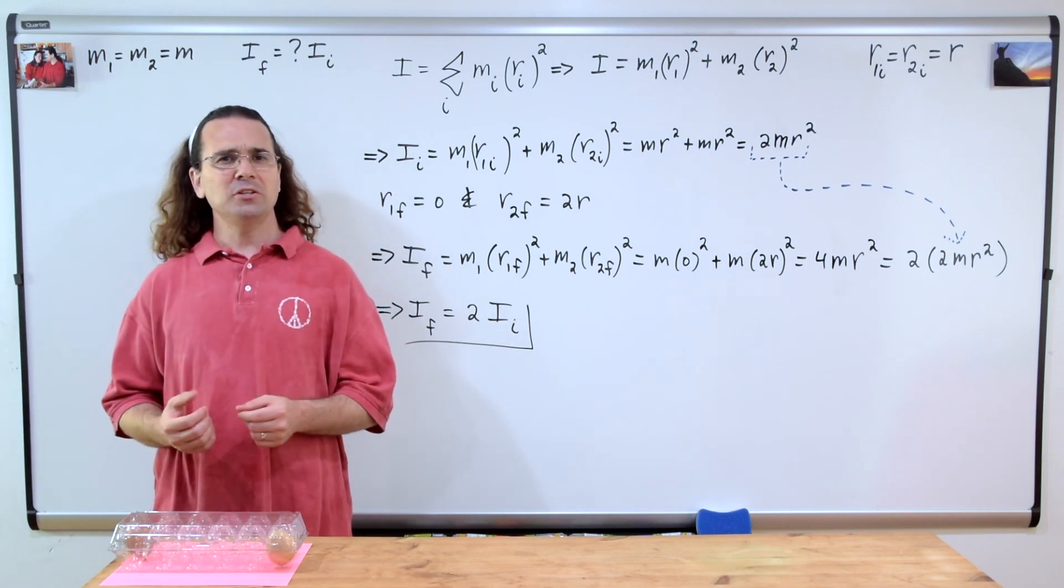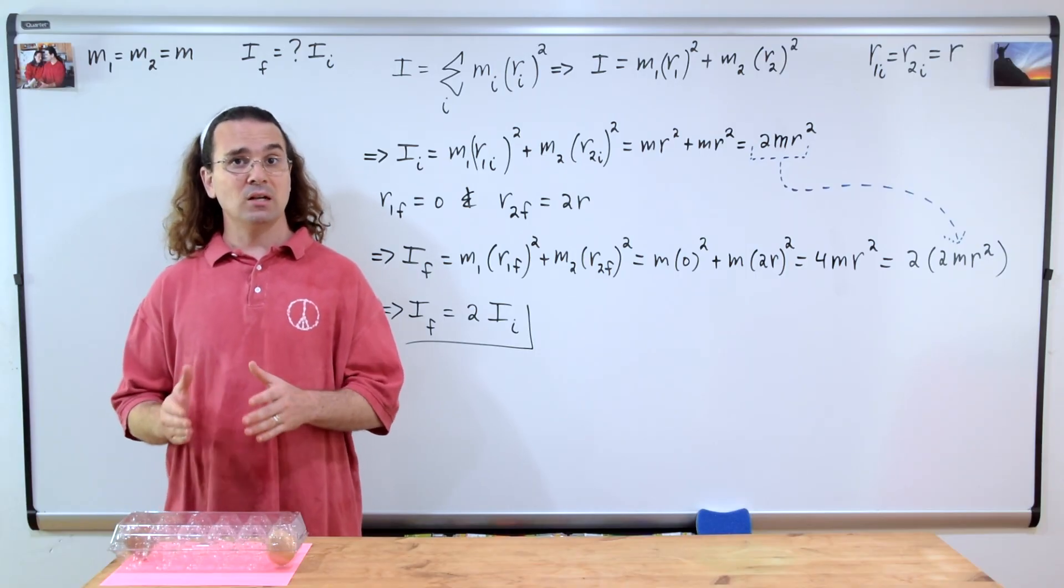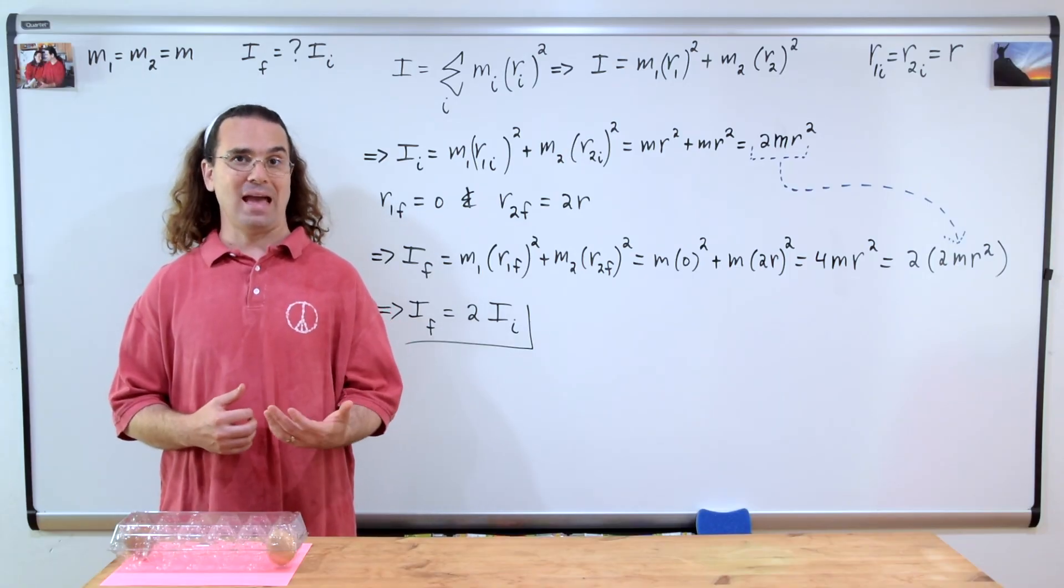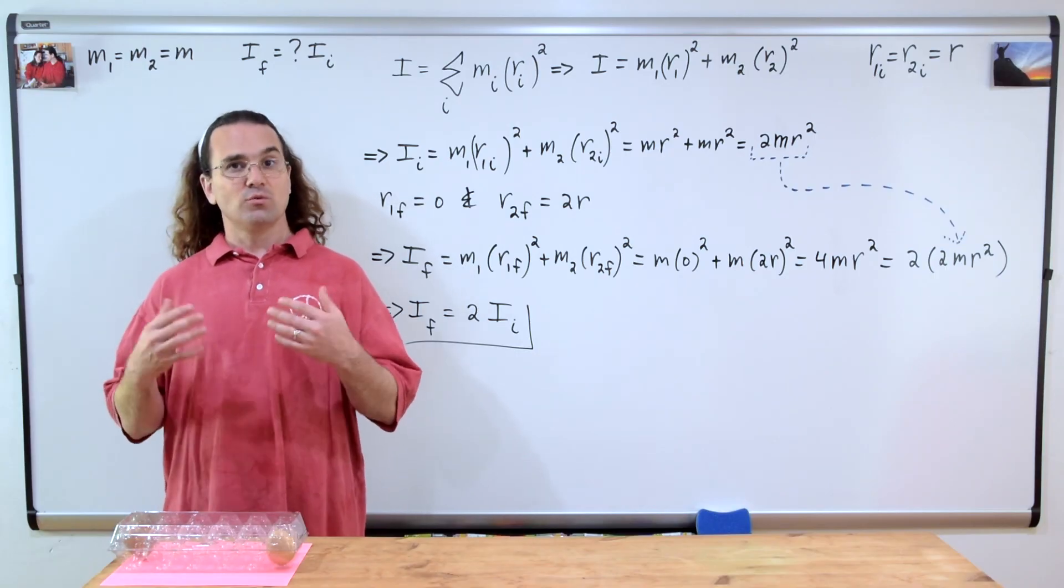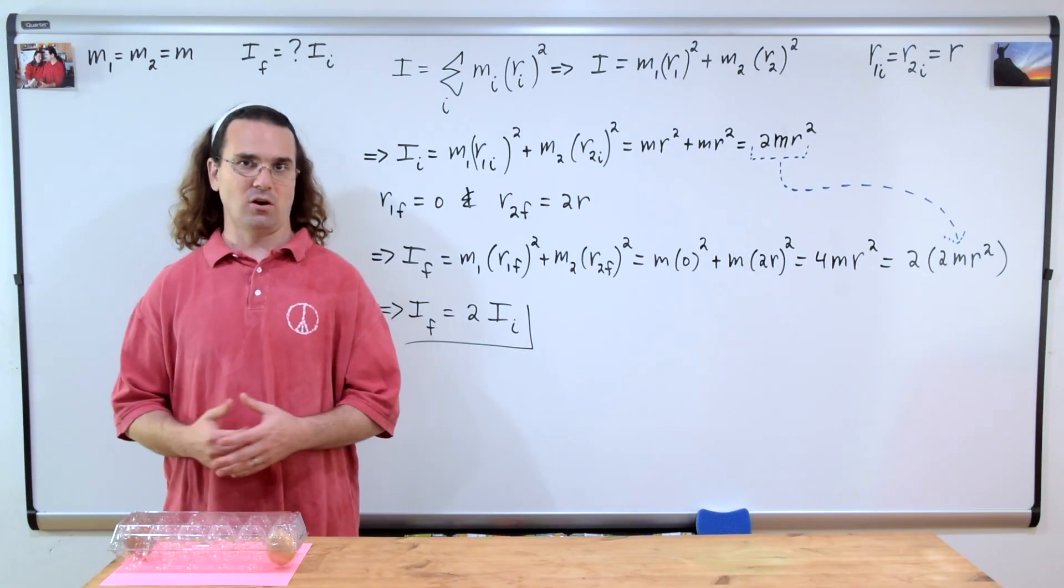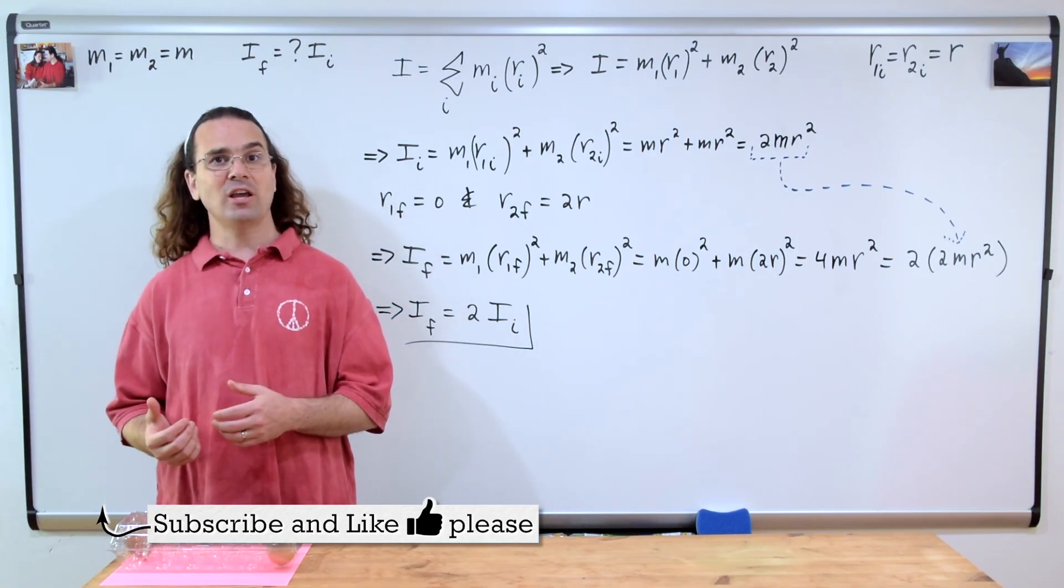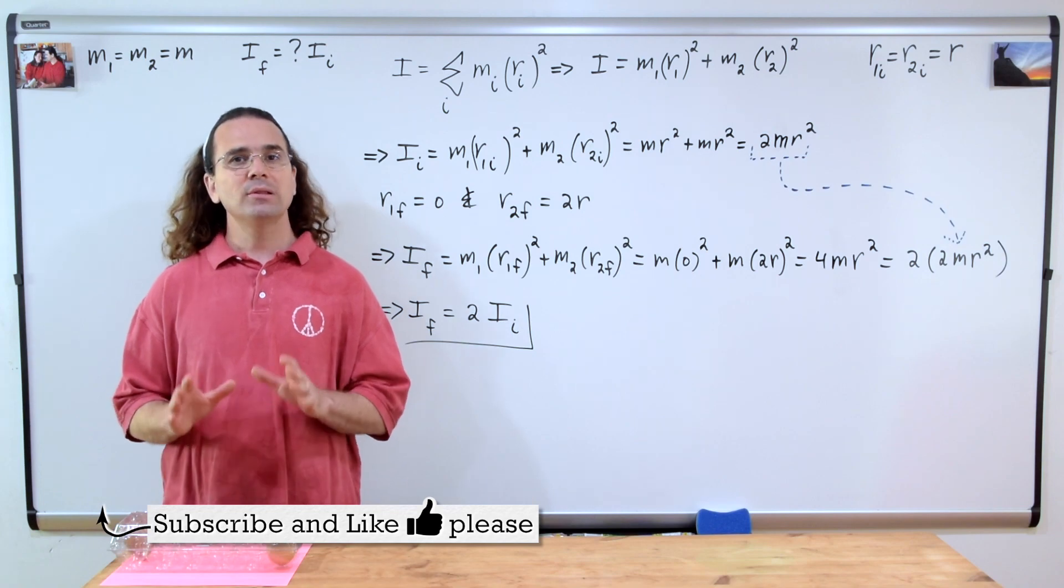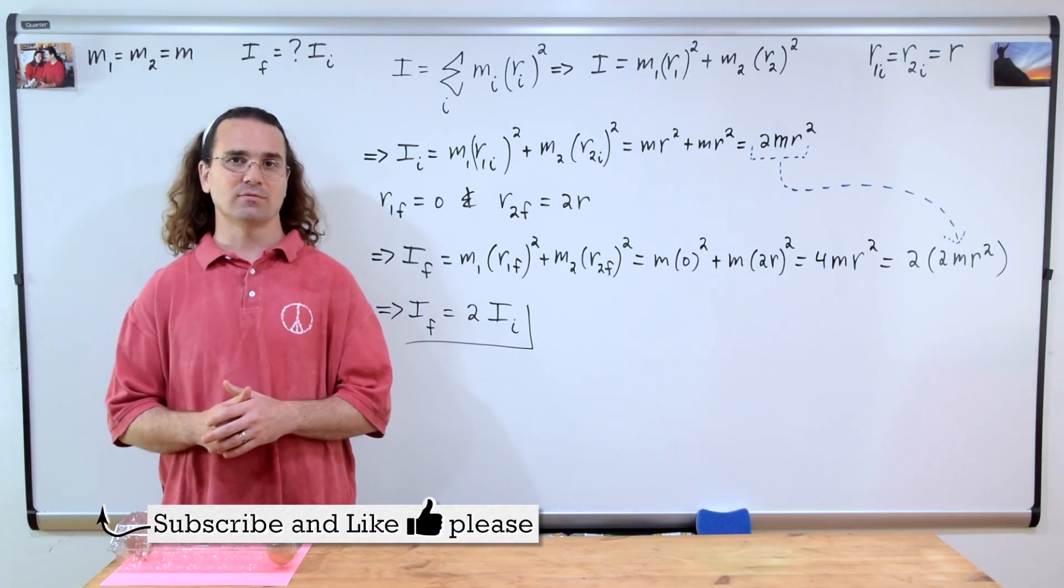In other words, by changing where we rotate this object from—from the middle to the end—we have roughly doubled the moment of inertia or rotational mass. It is now roughly twice as difficult to angularly accelerate the two eggs in the egg carton. This idea that we can change the moment of inertia by changing only the axis of rotation is often overlooked by students. Please be careful to recognize the importance of identifying where the axis of rotation is.